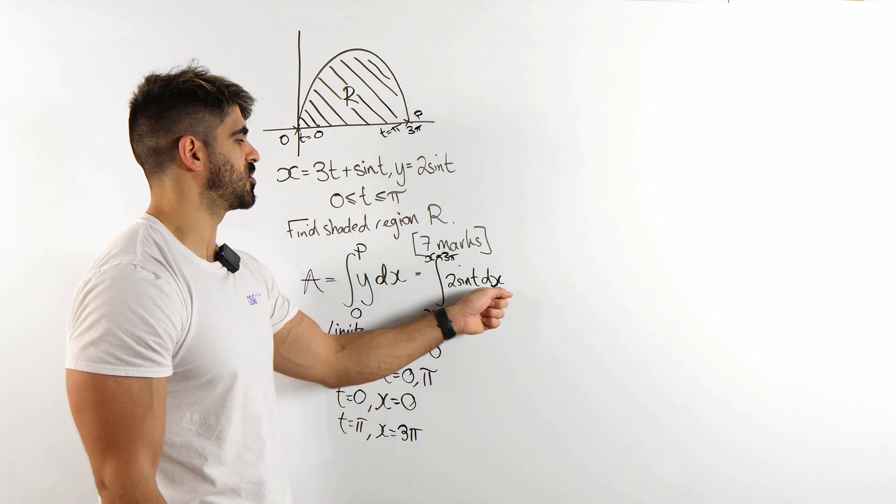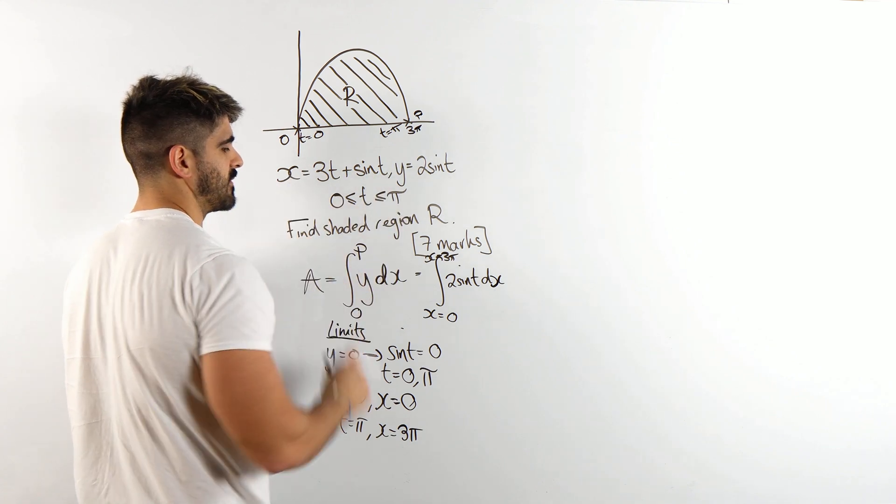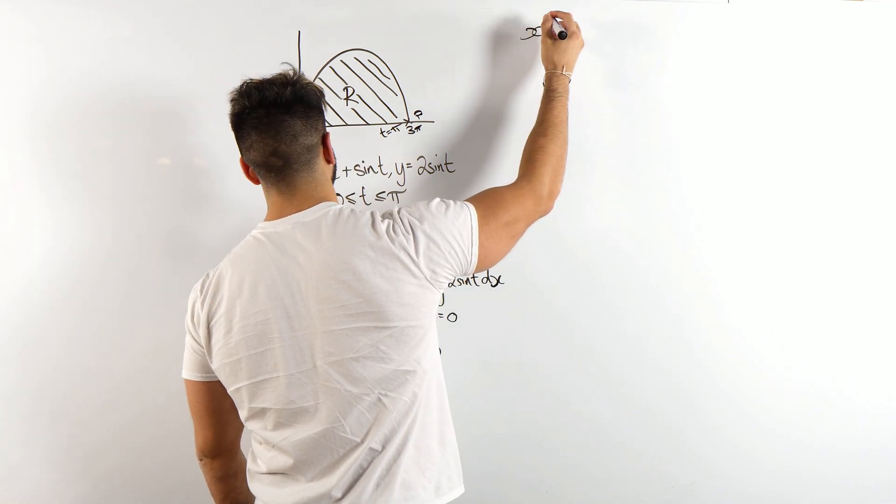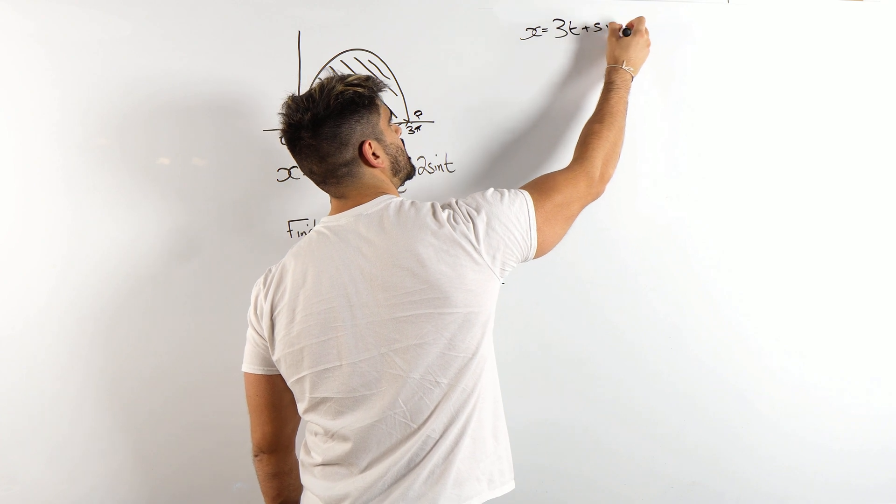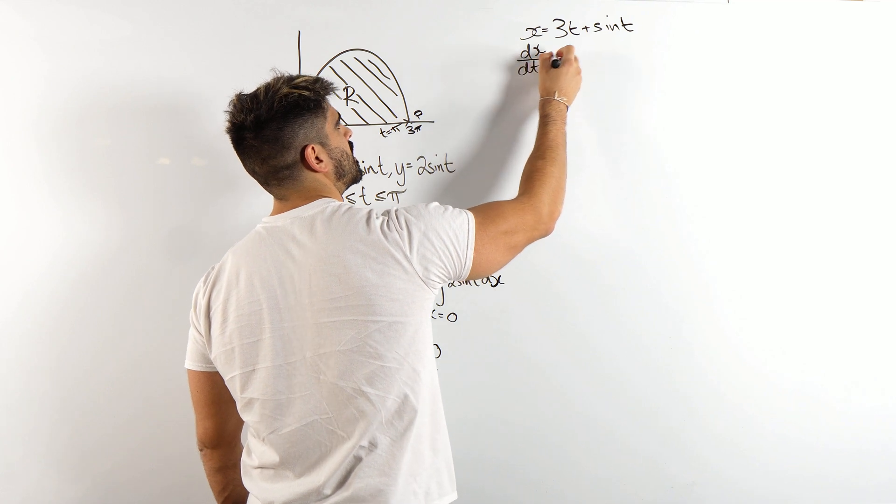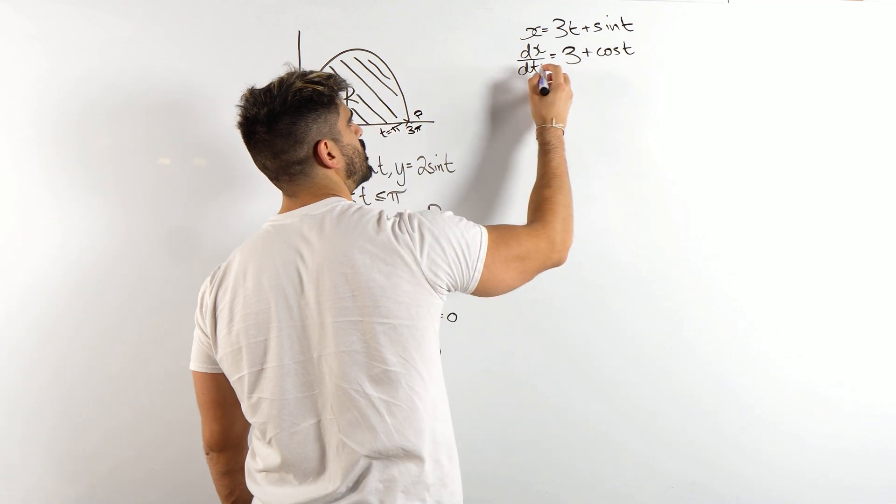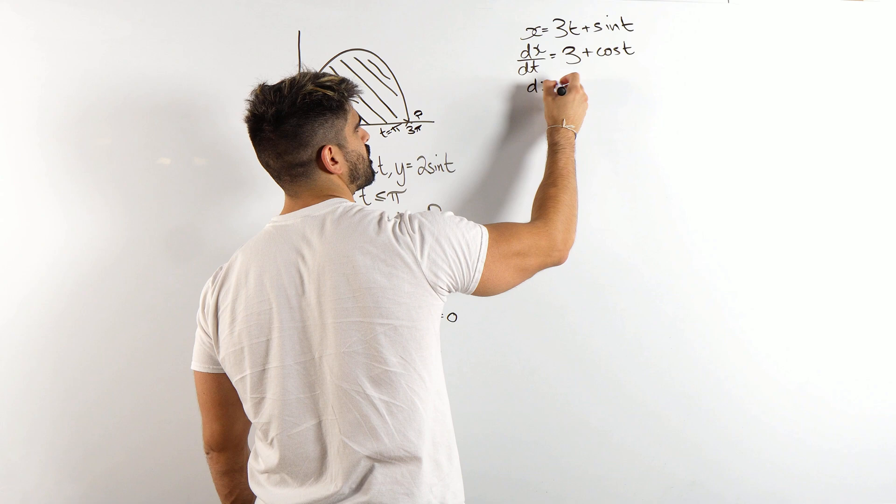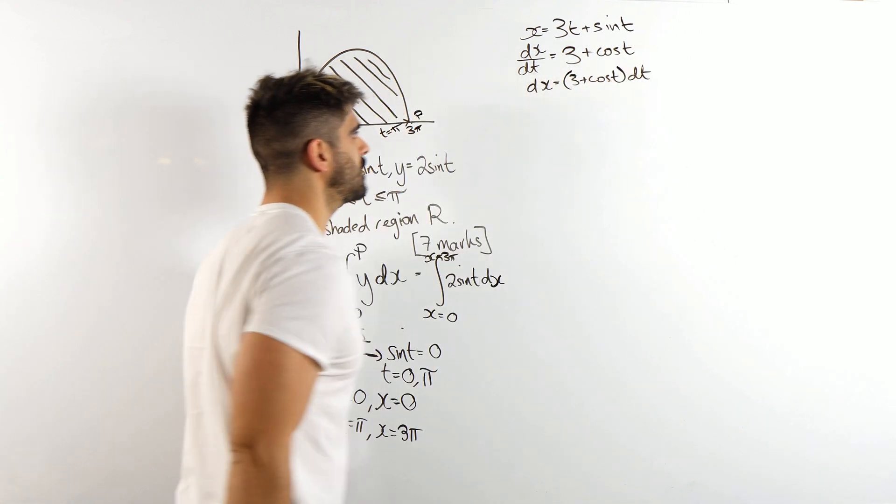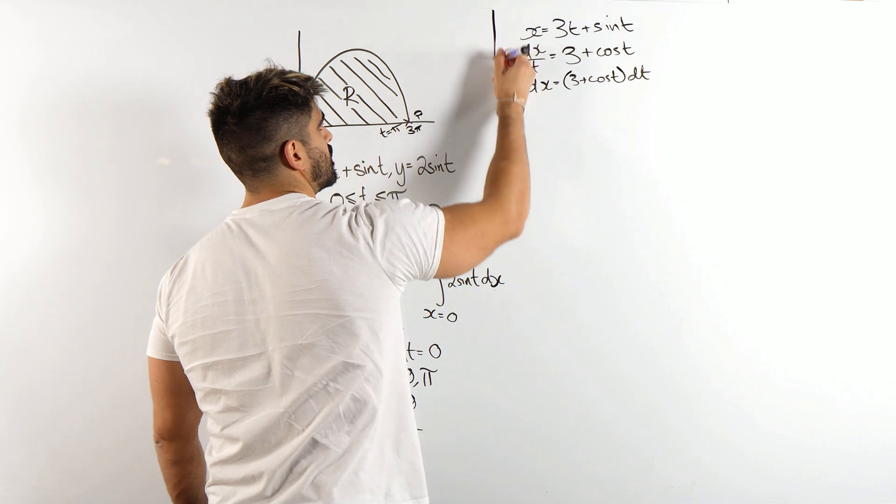Now, how do we do that? We're going to have to change this dx into dt. How do we do that? We take this, and we're going to have to differentiate it. So we have x is 3t plus sine t, so we can differentiate dx by dt. 3t differentiates to 3, sine differentiates to cos. So timesing through, we have dx is 3 plus cos t dt. And that's going to slot in there.